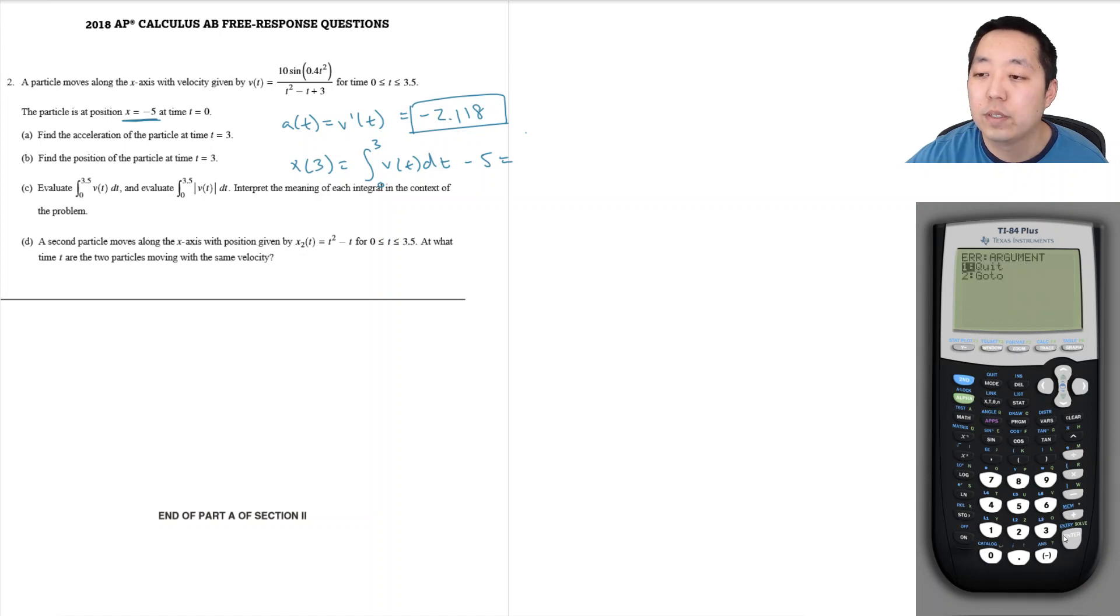I guess subtract 5 at the end. Dang it. I forgot to close this. No, wait. Wait. What's the problem here? 10 sine 0.4x squared. Close the sine. I open parentheses. x squared minus x minus 3.